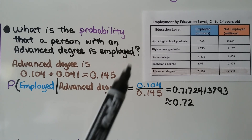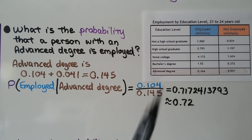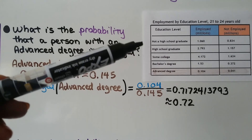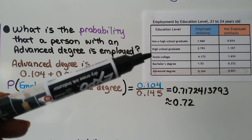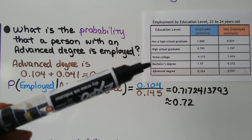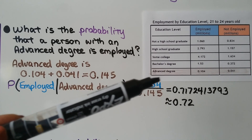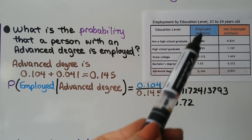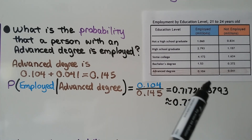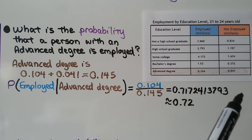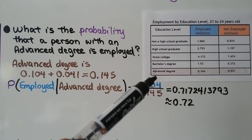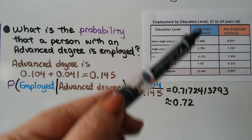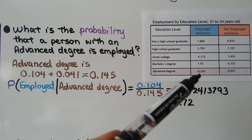Here we have employment by education level for 21 to 24 year olds. The education levels are: not a high school graduate, high school graduate, some college, a bachelor's degree, or an advanced degree like a master's degree. There's an employed column and a not employed column, both in millions. What's the probability that a person with an advanced degree is employed? Advanced degree employed is 0.104.